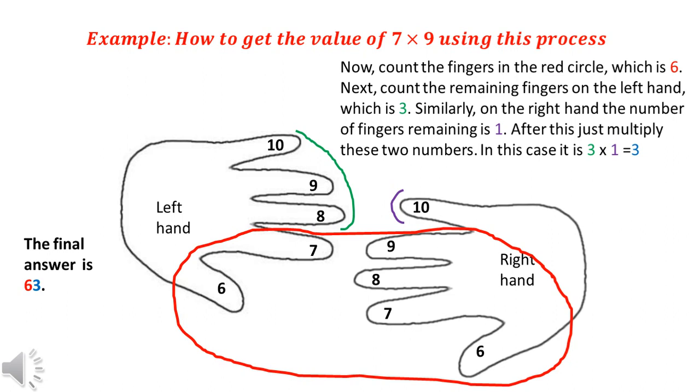The final answer is 63, which is obtained by placing the value 6 and the value 3 together. Note that the number 6 is the number of fingers in the red circle and the number 3 was obtained by multiplying the remaining fingers of the left and right hand.